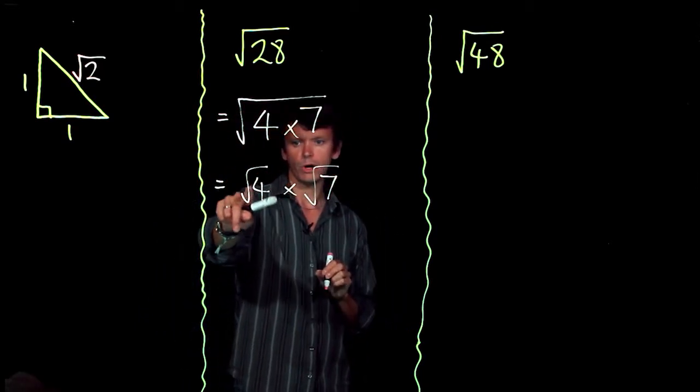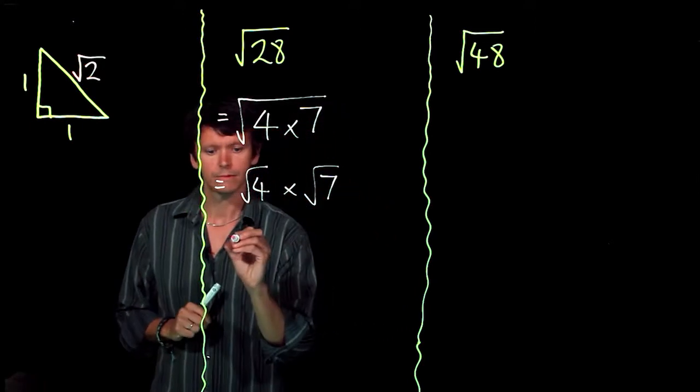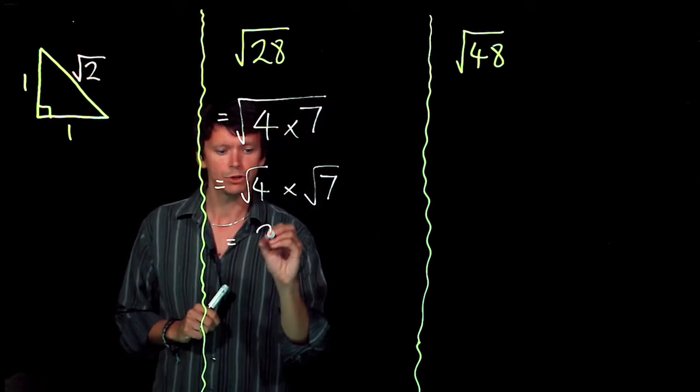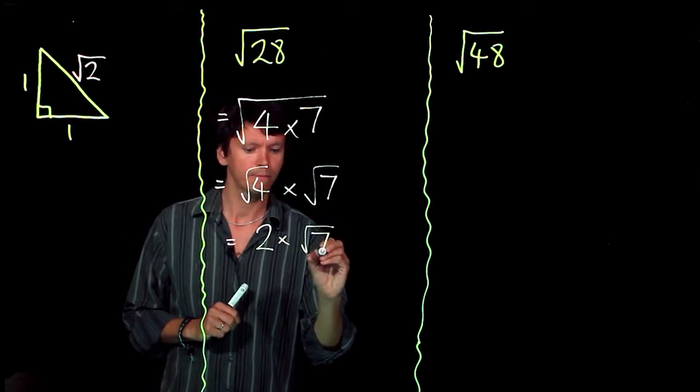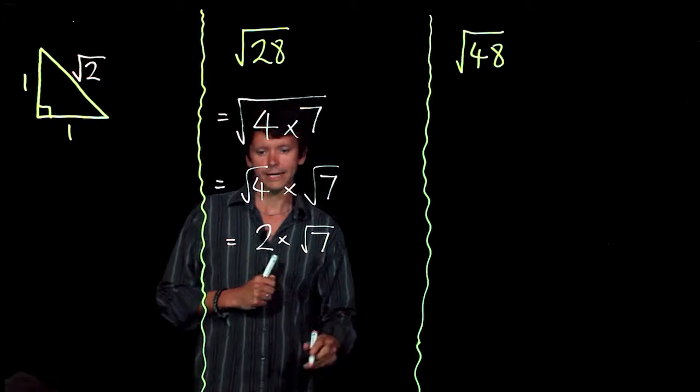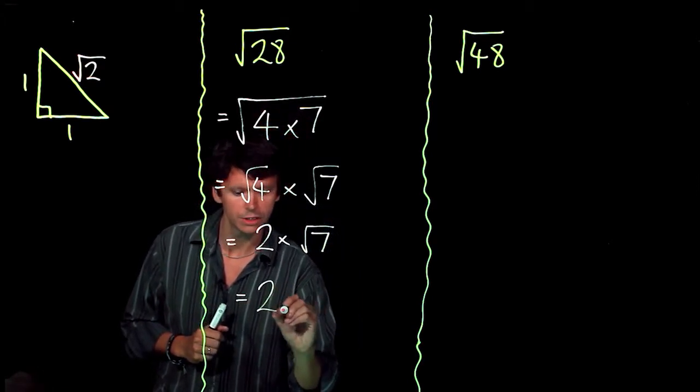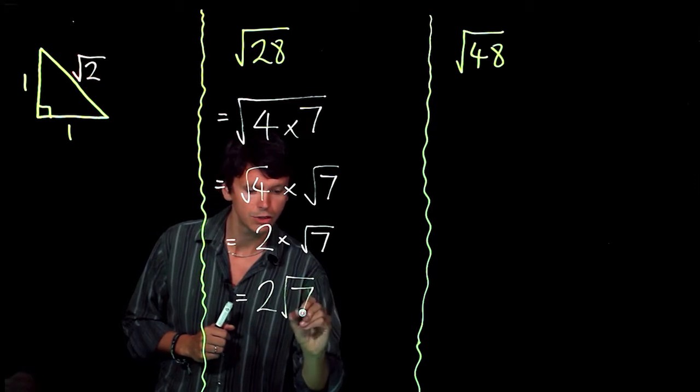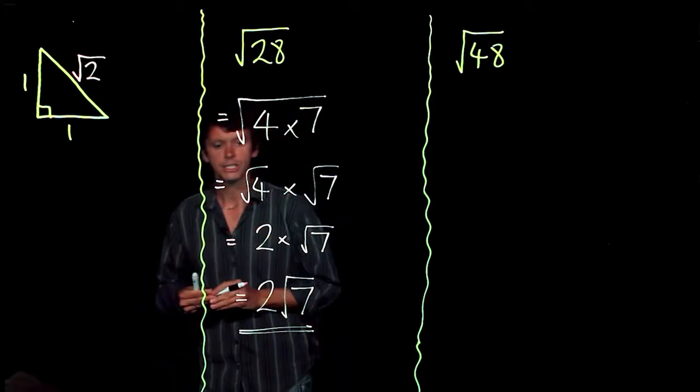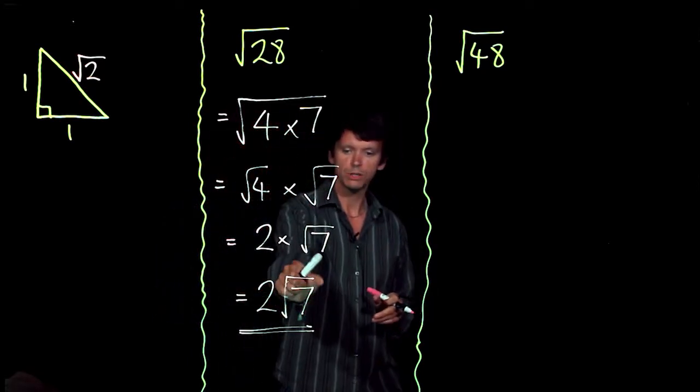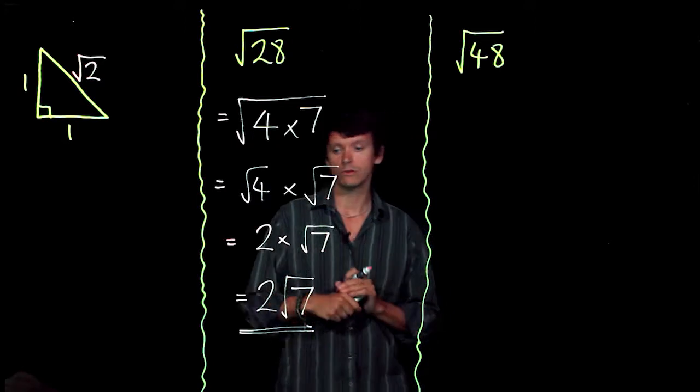Notice that we've got a square number here, 4. So when we take the square root of that we end up with 2 times by square root of 7. And to just tidy that up, to write that in surd form, we write this as 2 root 7. We've written that in surd form and we've found the smallest possible number that we could to go inside the square root sign.